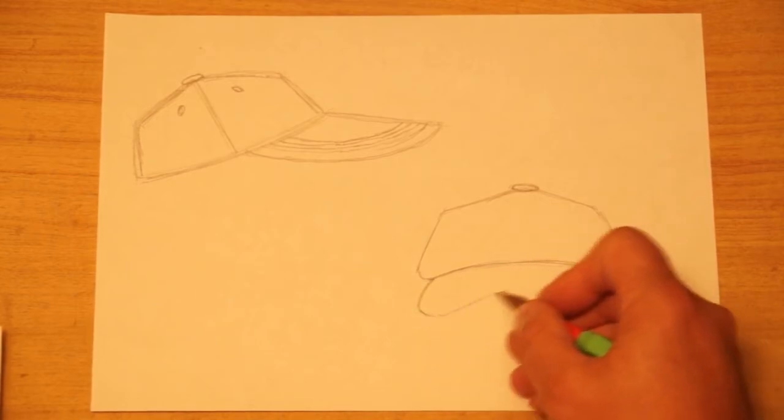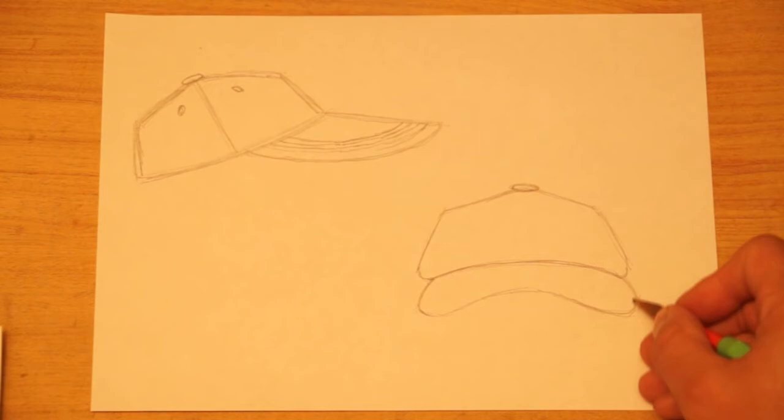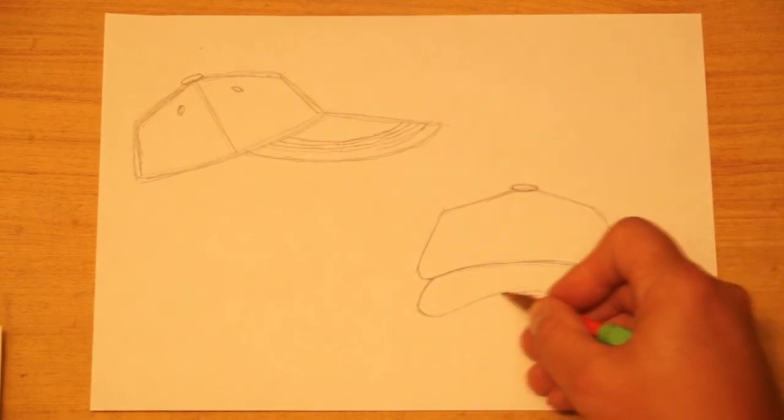The bottom part of the bill is going to curve up and then curve back down and curve around here on the right side. So this is the basic shape.